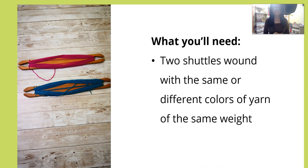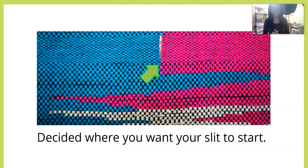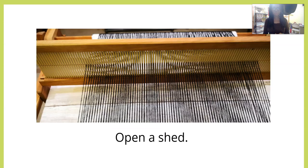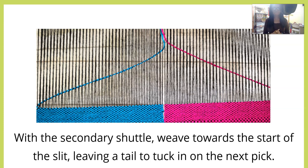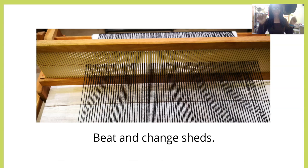What you're going to need: two shuttles wound with either the same or different colors of yarn of the same weight. Decide where you want your slit to start, then open the shed. Weave with the main shuttle to the desired spot, stop, and bring that shuttle out of the cloth. With the secondary shuttle, weave toward the start of the slit, leaving a tail to tuck in.